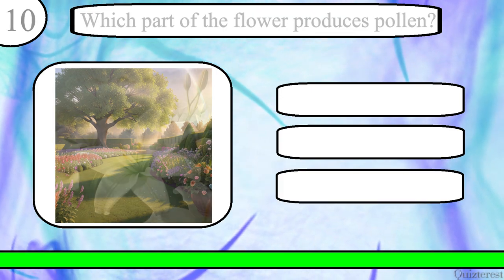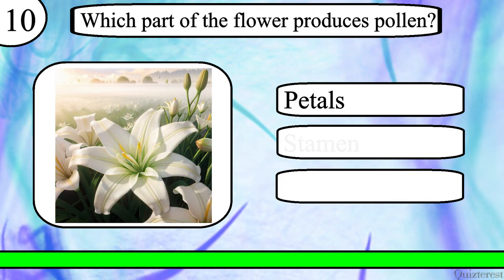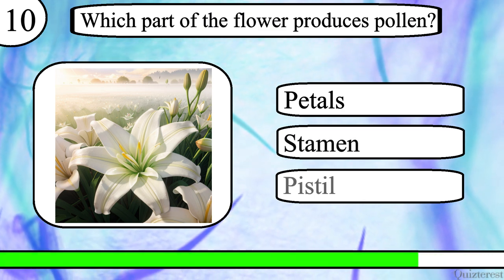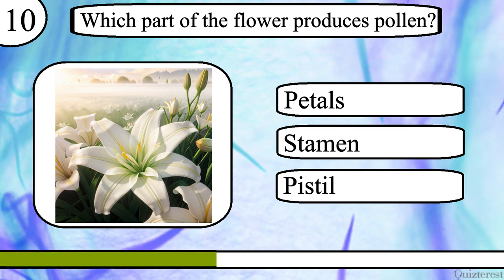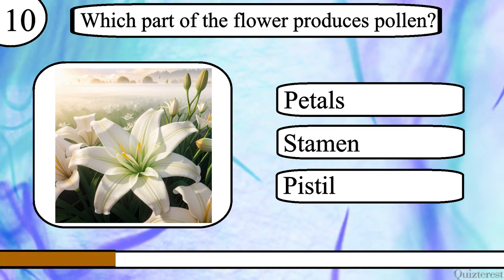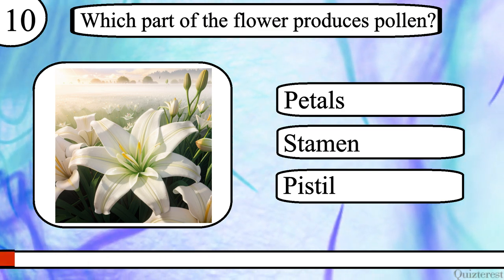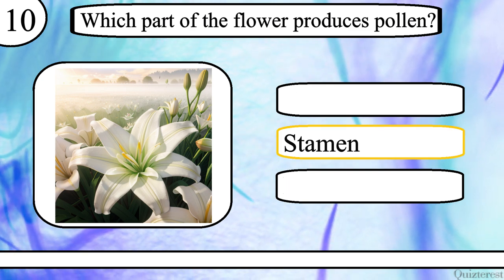Question 10. Which part of the flower produces pollen? Petals, stamen or pistil? The correct answer is stamen.